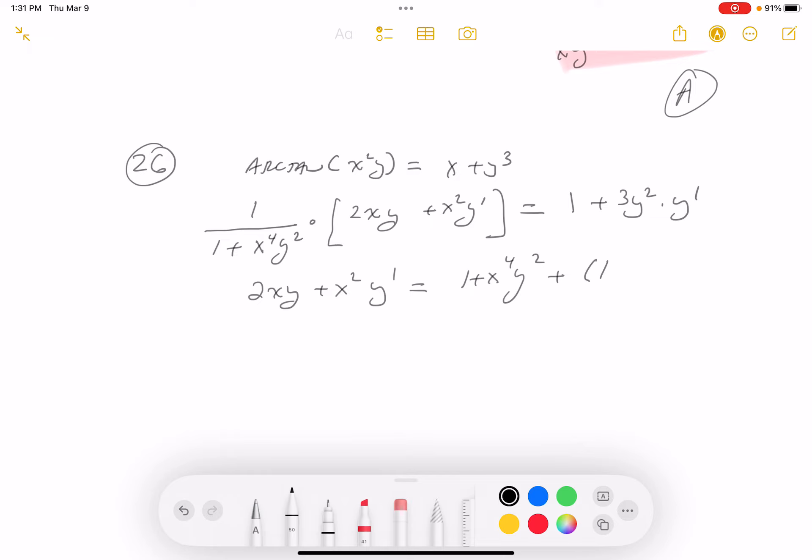Well, let me write that down. You're going to get, let's put this down, 1 plus x to the 4 y squared. That's the LCD. And then we get 3y squared y prime.